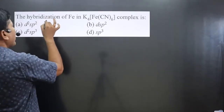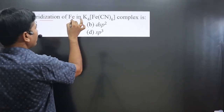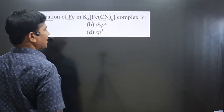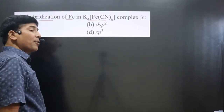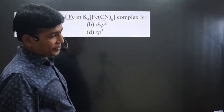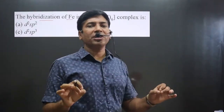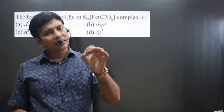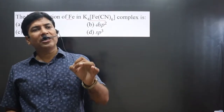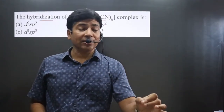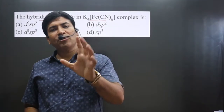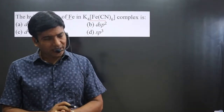The question asks: the hybridization of iron in K4Fe(CN)6 complex is? Whenever a question asks about hybridization, geometry, or magnetic properties, always apply valence bond theory.